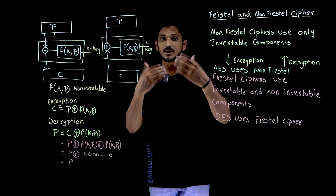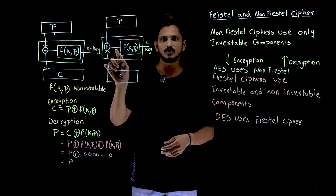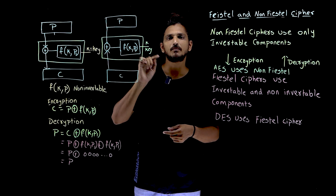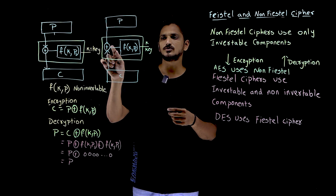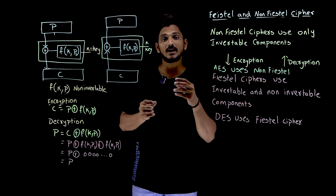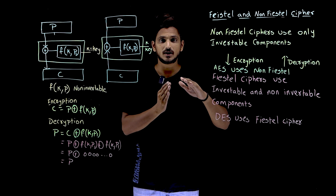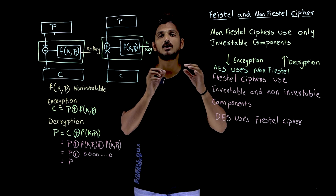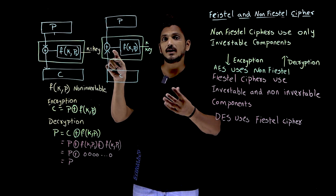For decryption, ciphertext comes to the destination. At the destination, you apply ciphertext XOR F(k, p1) again, which generates the same value X. So ciphertext XOR X gives you back the plaintext. The non-invertible component is not being reversed — instead, it is being cancelled out. This cancellation happens because of the XOR operation.